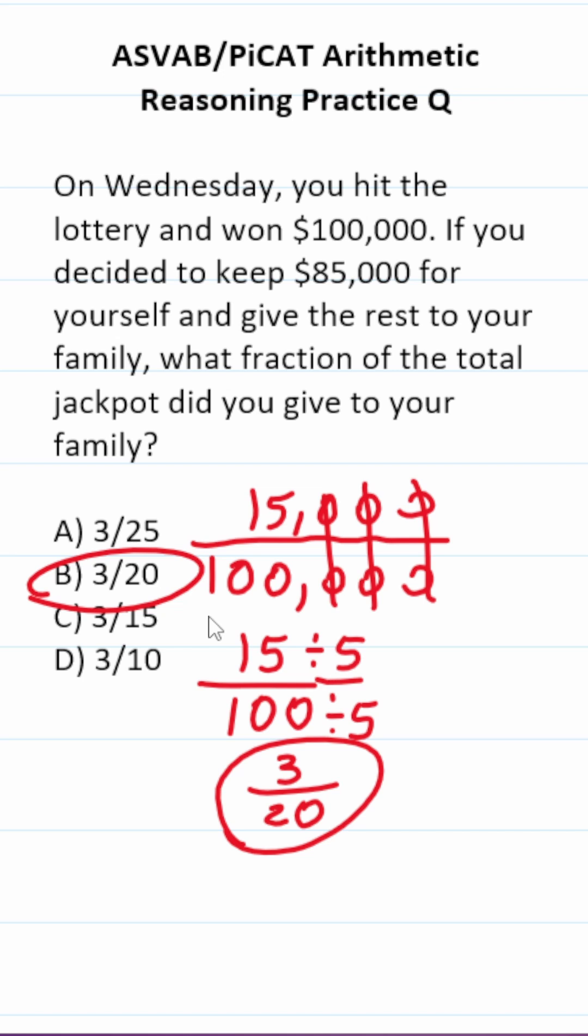So this is going to be B, 3 over 20. That is, you gave 3/20 of the total jackpot away to your family.